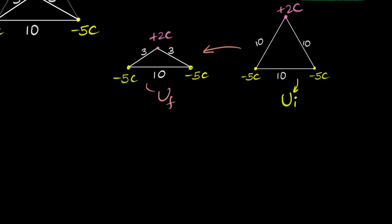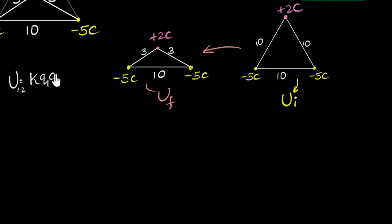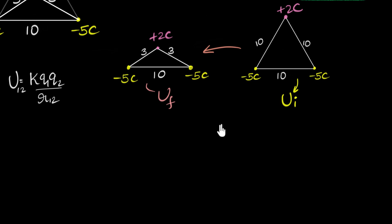A quick reminder of how we calculate potential energies of a system — we've seen this in the previous video. The potential energy of a system of just two charges would be K·Q1·Q2 divided by R12, where R12 is the distance between them. And if you want to calculate the potential energy of a system of three charges, you take two at a time: potential energy of pair one, plus potential energy of pair two, plus potential energy of pair three. Same applies here. Once you substitute, we can subtract and get an answer.